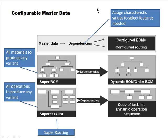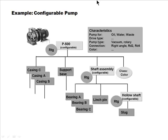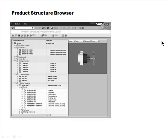A dependency is nothing but assigning characteristic values to select the needed features. Here is an example of a configurable pump - this is the general product with various options. All the materials to produce a variant are in the super BOM, all the operations are in the super routing, and once configured you get a real BOM and a real routing.